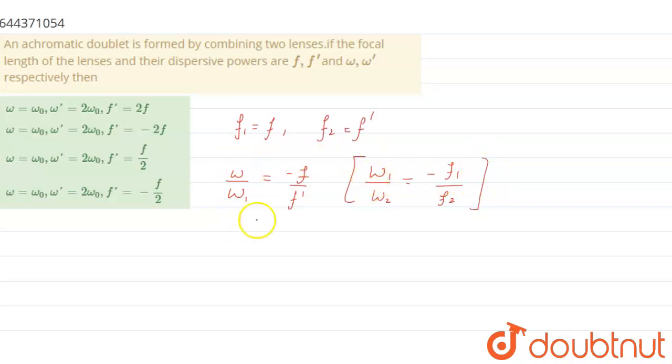From here we can say that omega upon 2 omega equals to minus f upon f1. So the value of f' comes out to be minus f upon 2.